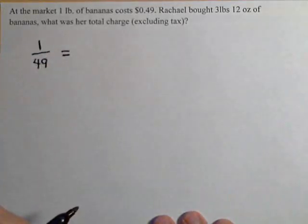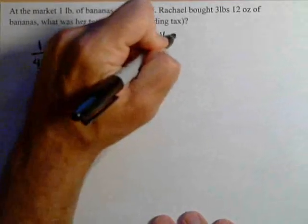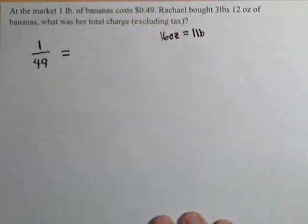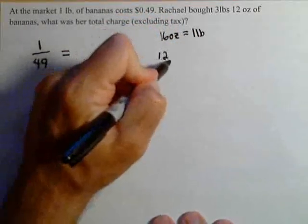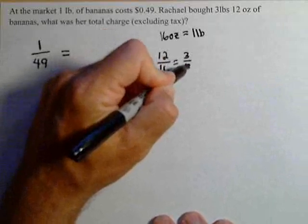Now, we need to figure out how much three pounds, 12 ounces costs of bananas. Remember, there's 16 ounces in one pound. Therefore, 12 ounces out of 16 ounces is 3 fourths.